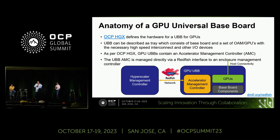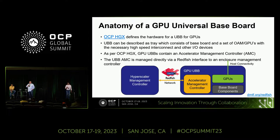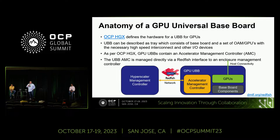The second form factor is the UBB — Universal Baseboard-based accelerator. An example of that is an HGX chassis. The UBB anatomy includes a set of accelerator devices such as GPUs, standard baseboard components, and an accelerator management controller that connects to the hyperscaler management control plane. The Redfish interface over a network enables hyperscalers to manage these UBBs.